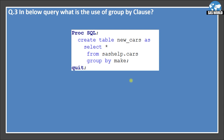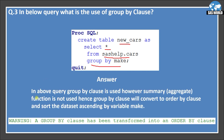In the below query, what is the use of the GROUP BY clause? The query is: create table new_cars as select * from sashelp.cars group by make. We have a GROUP BY clause but no summary or aggregate function. The answer is: when GROUP BY is used without an aggregate function, it converts to an ORDER BY clause and sorts the dataset ascending by the variable make. A warning will appear in the log: 'a GROUP BY clause has been transformed into an ORDER BY clause.' Please remember this — it is mostly asked in interviews.